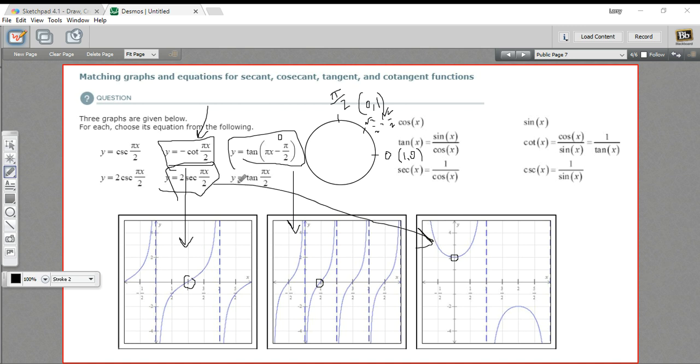Of course, if you've got a graphing calculator, you could just plug these in and see what they match. But in this case, just testing a point seems to work out pretty well. So that's how to match graphs for equations of secant, cosecant, tangent, and cotangent functions.